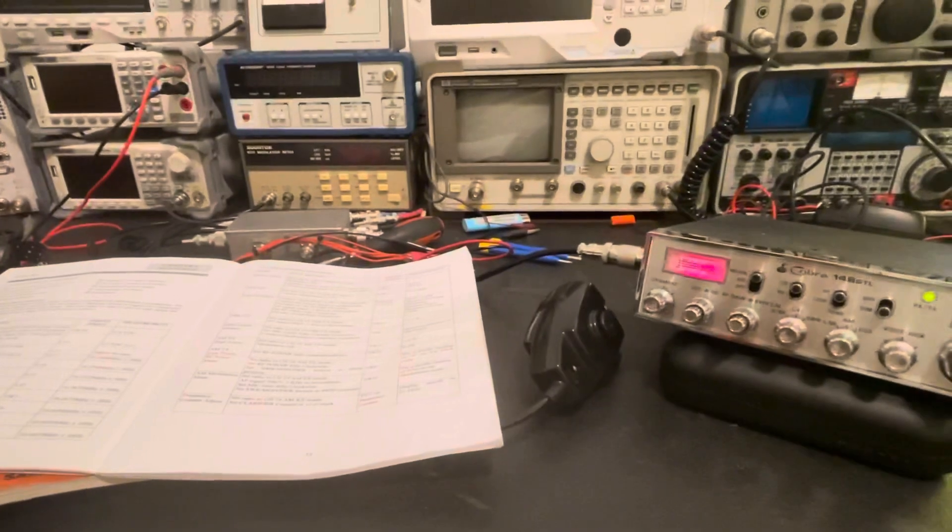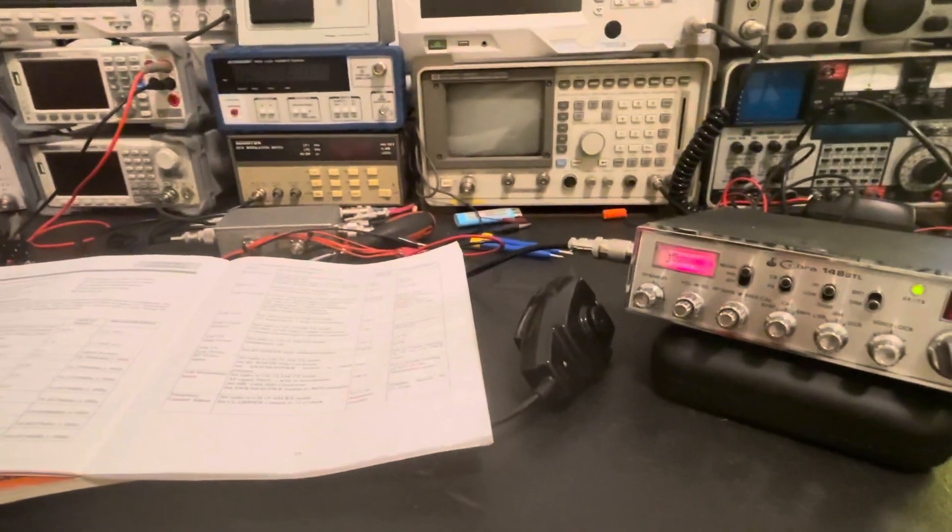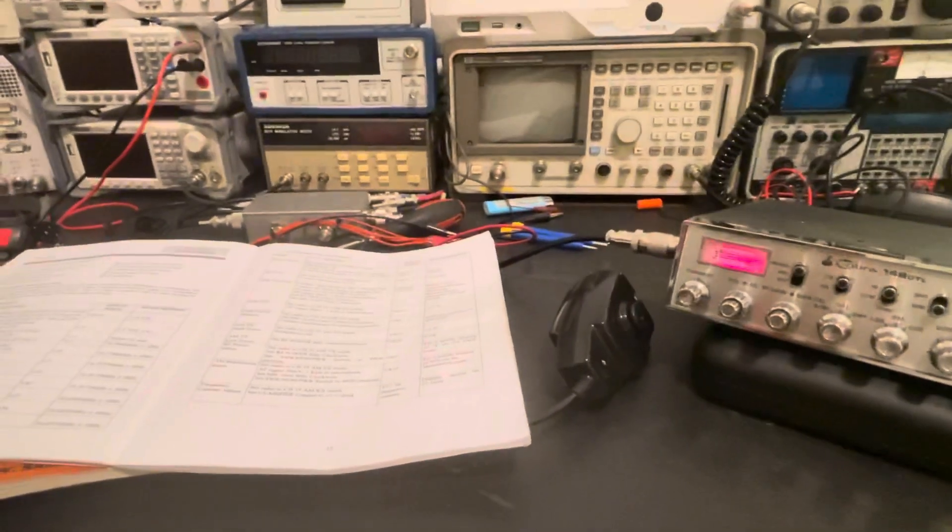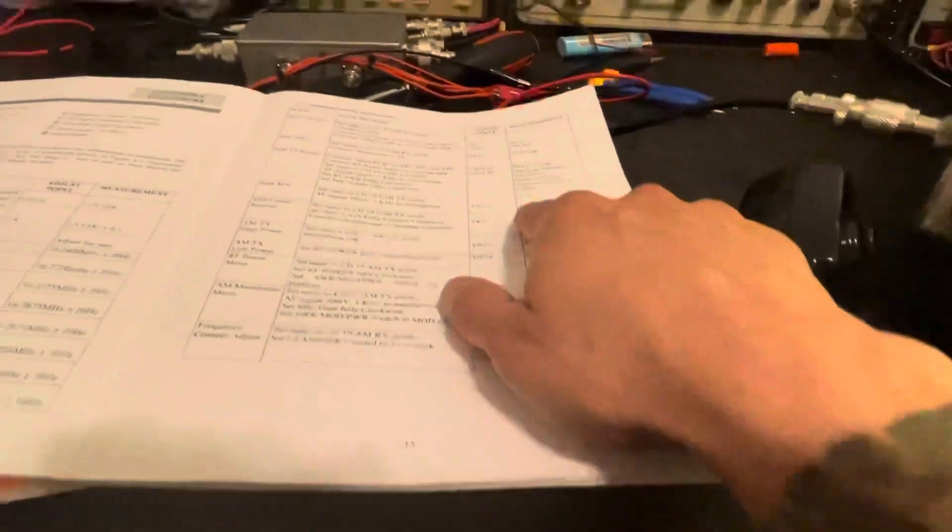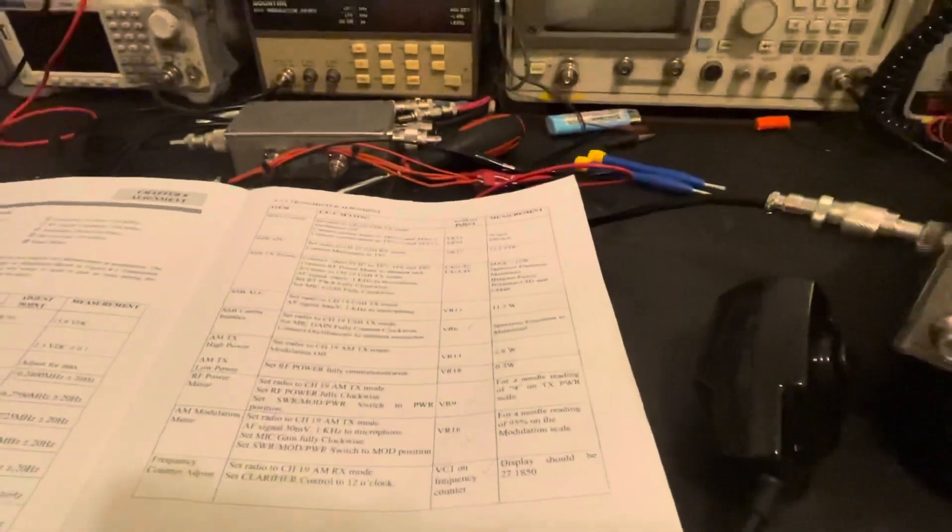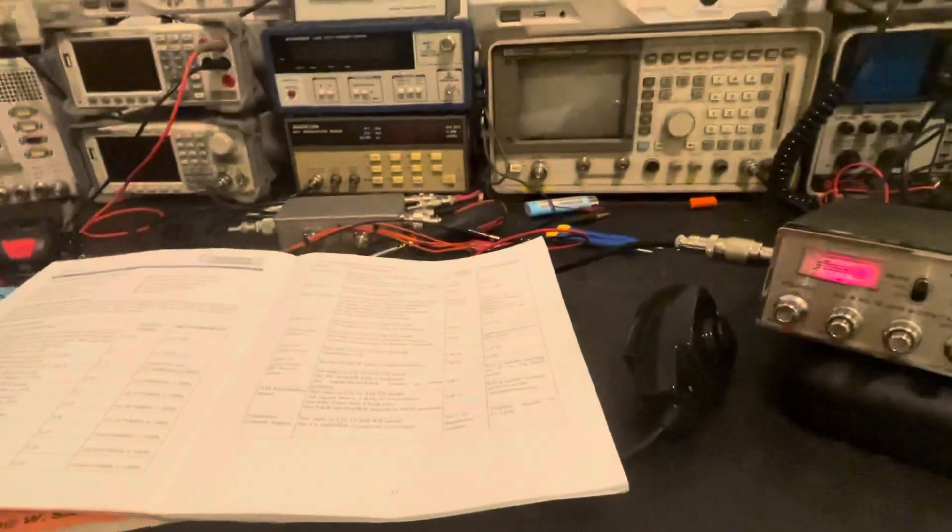We're talking about that Galaxy DX959 was made in Vietnam. Is there some type of language barrier when they look at this? Since it doesn't specifically say peak, are they interpreting that as 11.5 watts RMS?